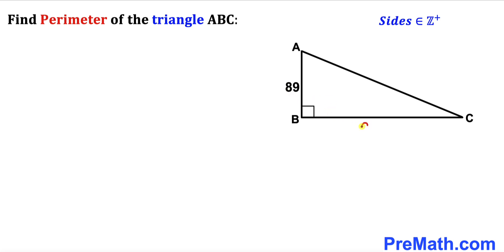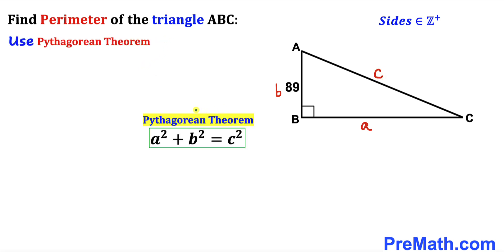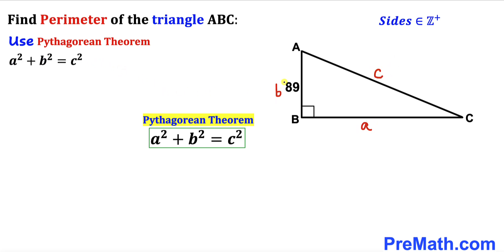I'm going to call this side length lowercase a, this side length lowercase b, and the longest leg — the hypotenuse — lowercase c. Now we are going to use the Pythagorean theorem: a² + b² = c², where the horizontal side is a, the vertical side is b, and the hypotenuse is c. The only known value is b = 89, so we fill in the formula: a² + 89² = c².